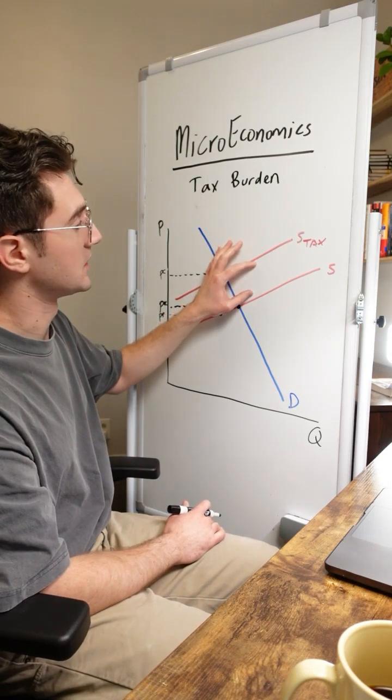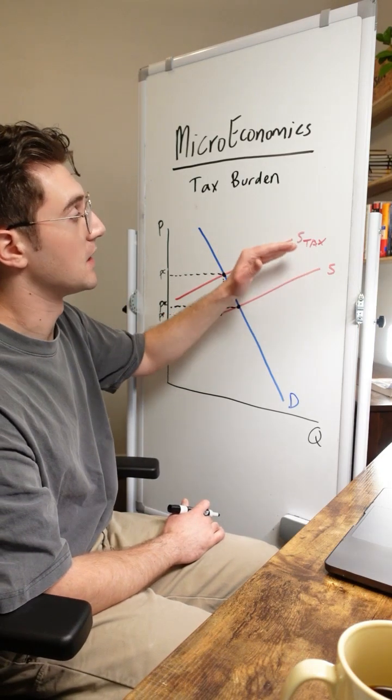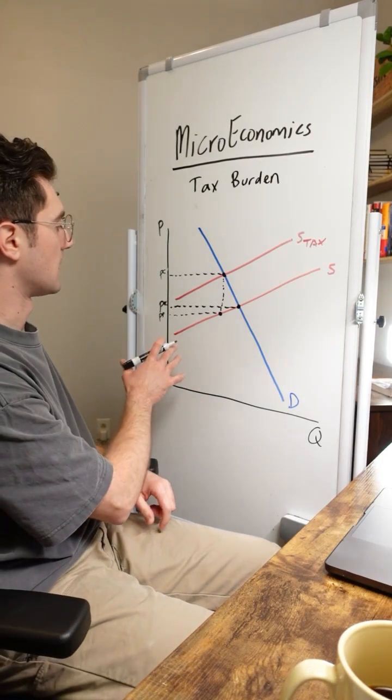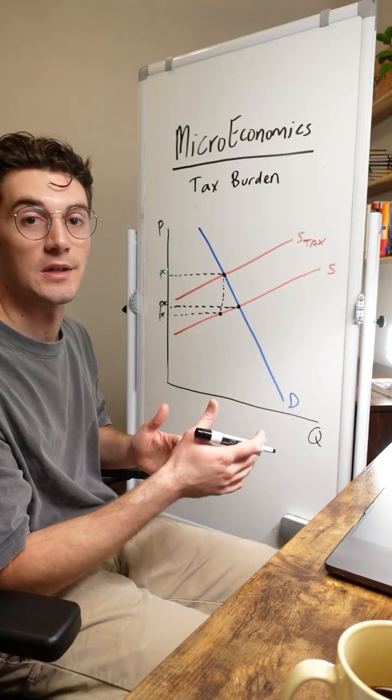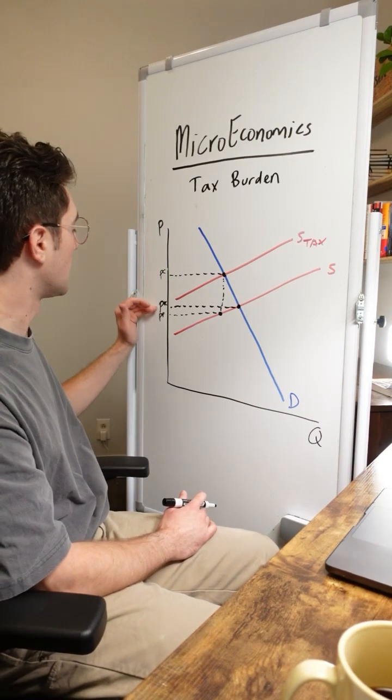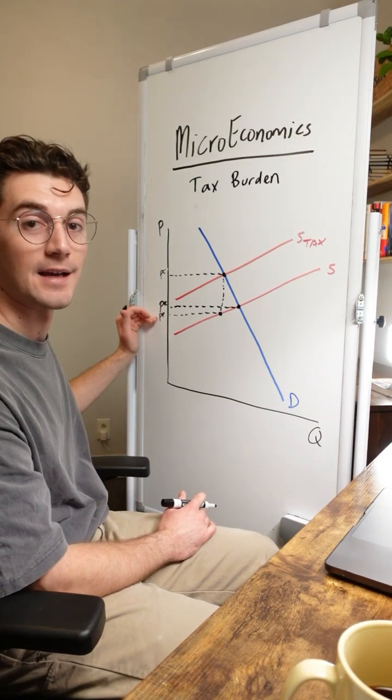Because this also is the vertical distance of the height shift between the supply and supply plus tax curves. So with that being said, we're able to start to visualize who's paying more of this tax right here. This was the original price and now consumers are paying way more and producers are only receiving a little less.